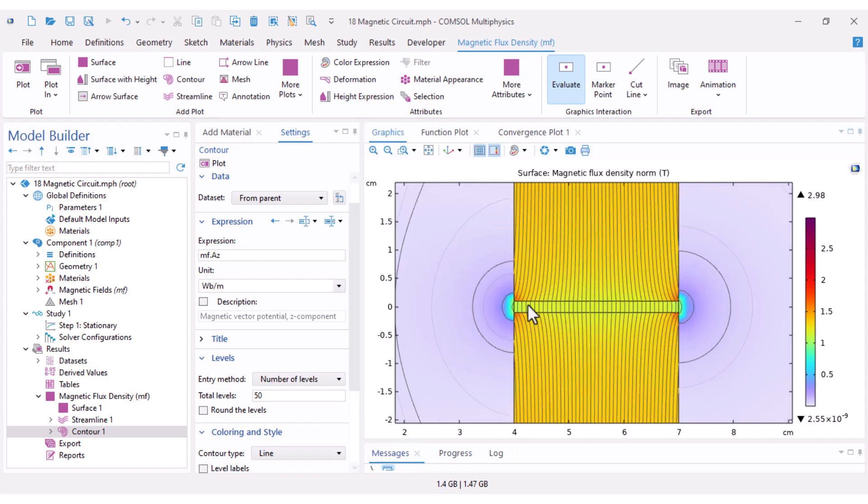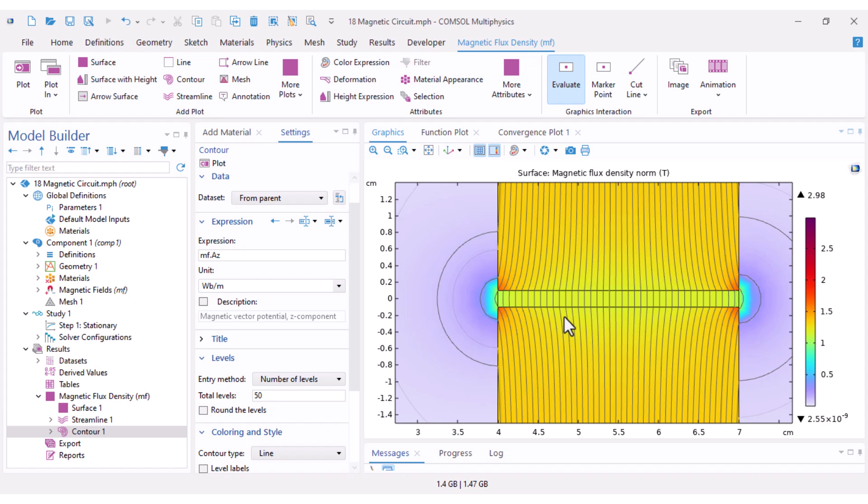Now the fringing effect appears beautifully near the air gap, just as expected. Our model is functioning perfectly.